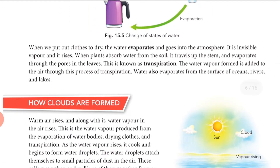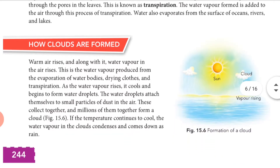Now about transpiration: plants during the day lose water through their stomata. We can feel coolness around plants because of this loss of water through the stomata. This process is called transpiration.